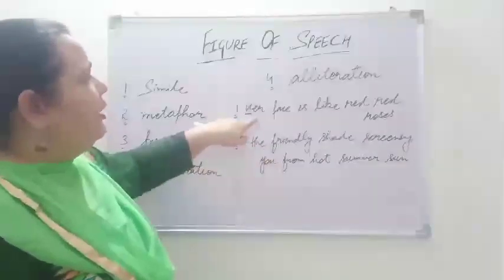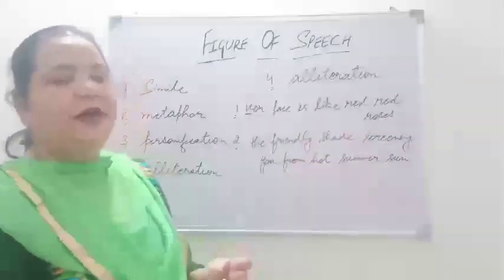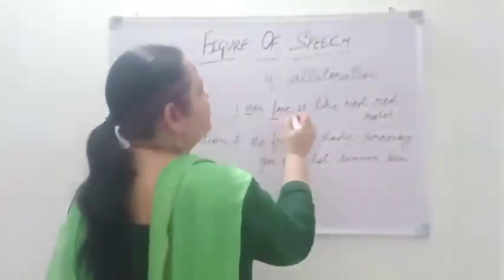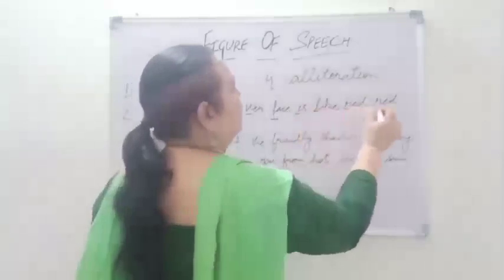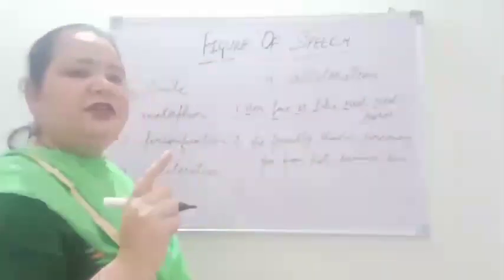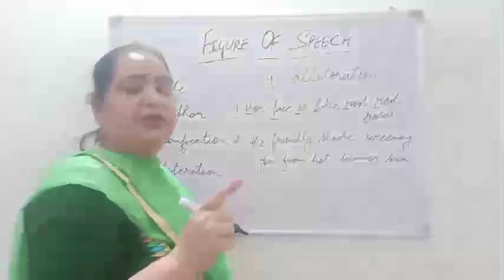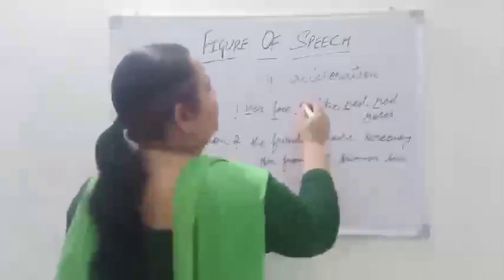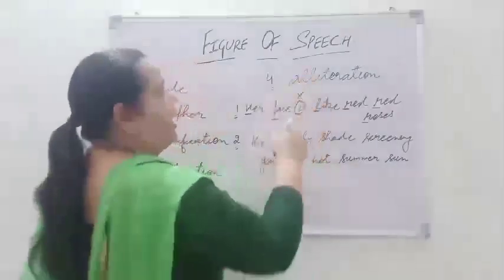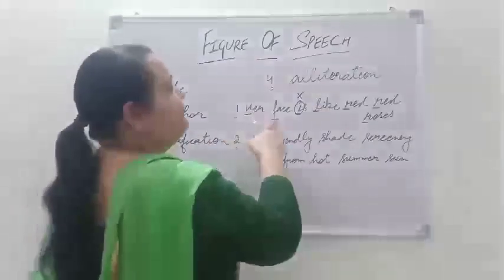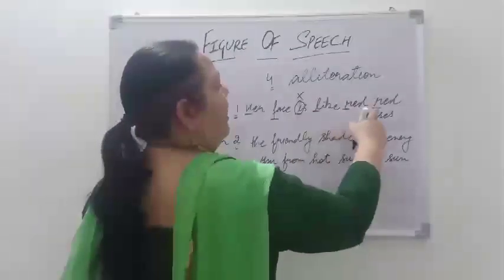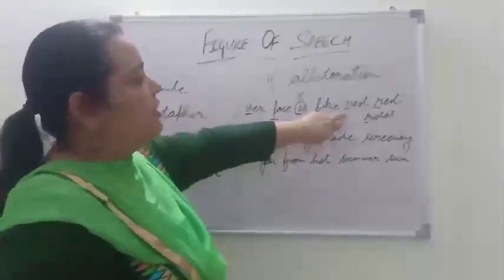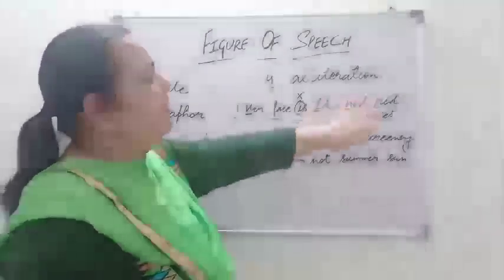Now let's take this example: 'Her face is like red roses.' Now, the second thing is that it should be a consonant — it should not be a vowel sound. So you won't be considering I. Going word by word: H, F, L, R, R, R. You can easily make out that one consonant sound — R — is used three times.